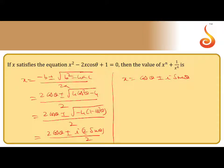The roots are cosθ plus i·sinθ and cosθ minus i·sinθ. Let us take x equal to cosθ plus i·sinθ. Then 1 by x will be cosθ minus i·sinθ.